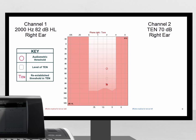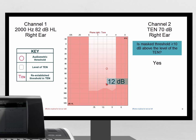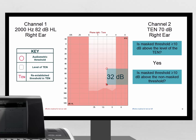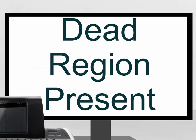The masked threshold is therefore 12 dB larger than the TEN, which satisfies the first criteria. In addition to this, the masked threshold is 32 dB larger than the non-masked threshold. This satisfies the second criteria. In this example, we have successfully identified an area of off-frequency listening and therefore a dead region is present.